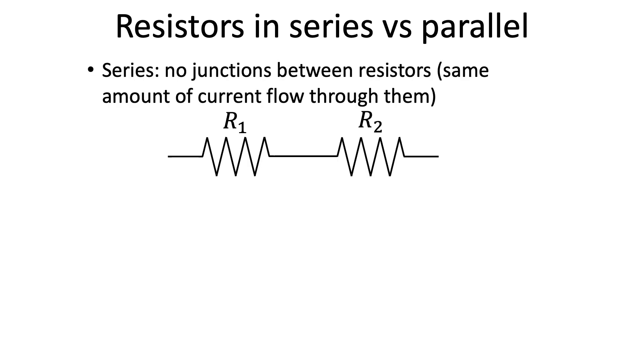Two resistors are in series if they are connected by a wire that has no junction. In this diagram, the wire connecting R1 and R2 has no junction, so they must be in series. This allows the same amount of current to flow through R1 and R2.